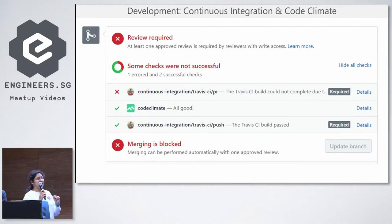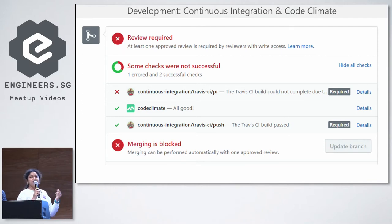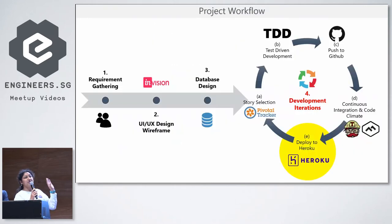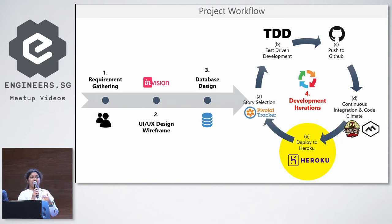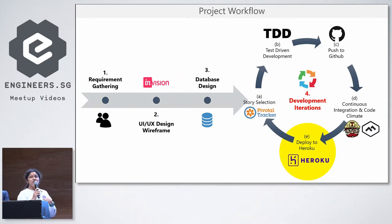So we need to go back into the development cycle, fix it, and push it again. After everything is green, we deploy it to Heroku. And that is when our stakeholders are able to take a look at the features that we've already developed, and either approve or provide feedback, which we include in the next cycles to come.